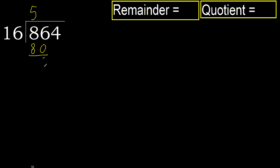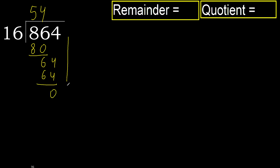Subtract — next bring down to get 64. 16 multiplied by 4 is 64, which is not greater — ok. Subtract next. There is no remaining number, therefore we finish.